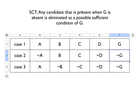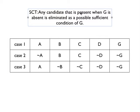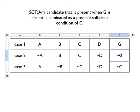If we look at our definition, it's important that we notice that we're looking for cases where G is absent. In those cases where G is absent, we're looking for whether or not the candidate feature is present. If it is present, that means we can eliminate that candidate feature as a sufficient condition for G.